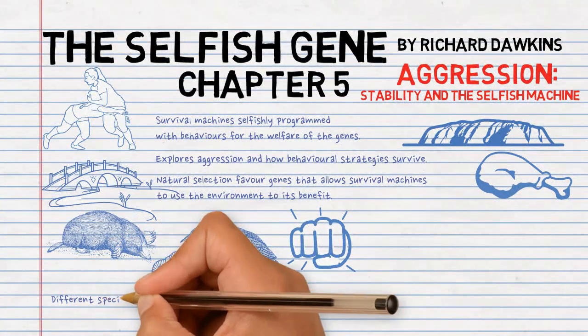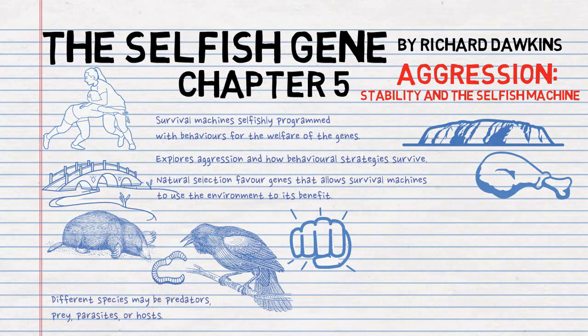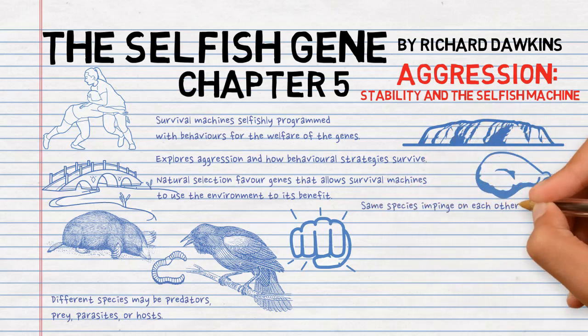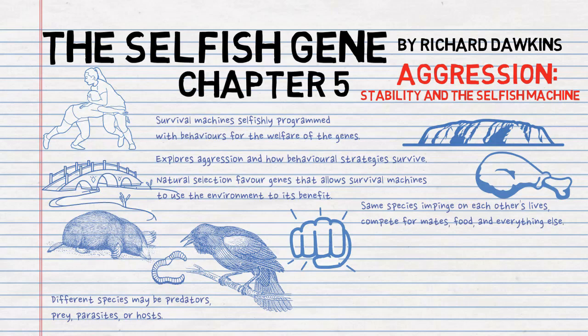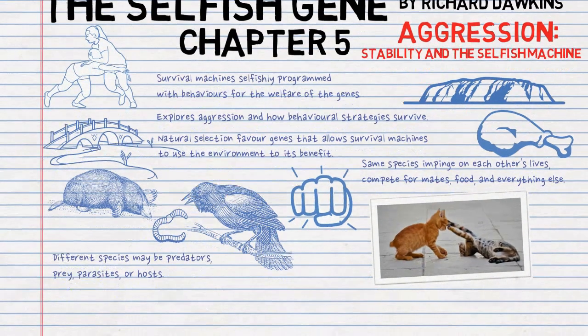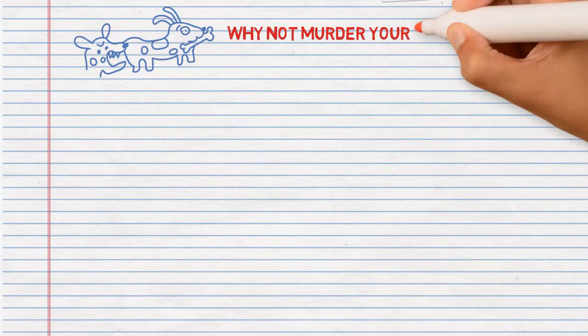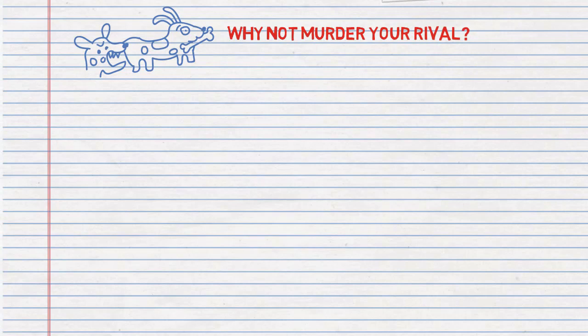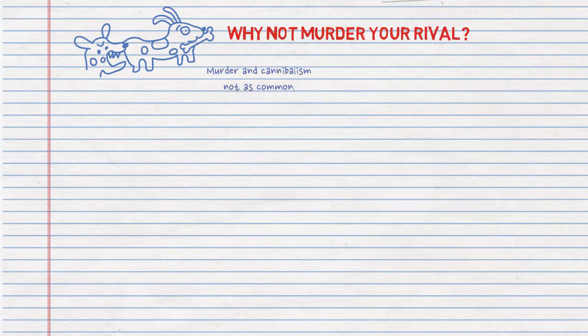Different species may be predators, prey, parasites, or hosts. Usually survival machines within the same species tend to directly impinge on each other's lives as they compete for mates, or in the example of blackbirds, compete for worms and everything else. We would assume that the logical thing for a survival machine to do is to murder its rivals and eat them. However, murder and cannibalism are not as common as we'd expect.